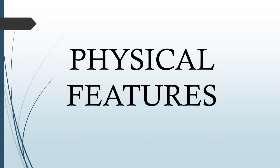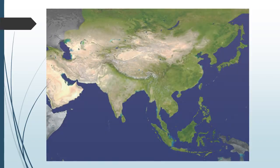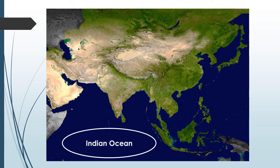Next are the physical features. The first physical feature is the Indian Ocean. It's found south of India and it's the third largest ocean. It's also the warmest ocean in the world because it's located near the equator.